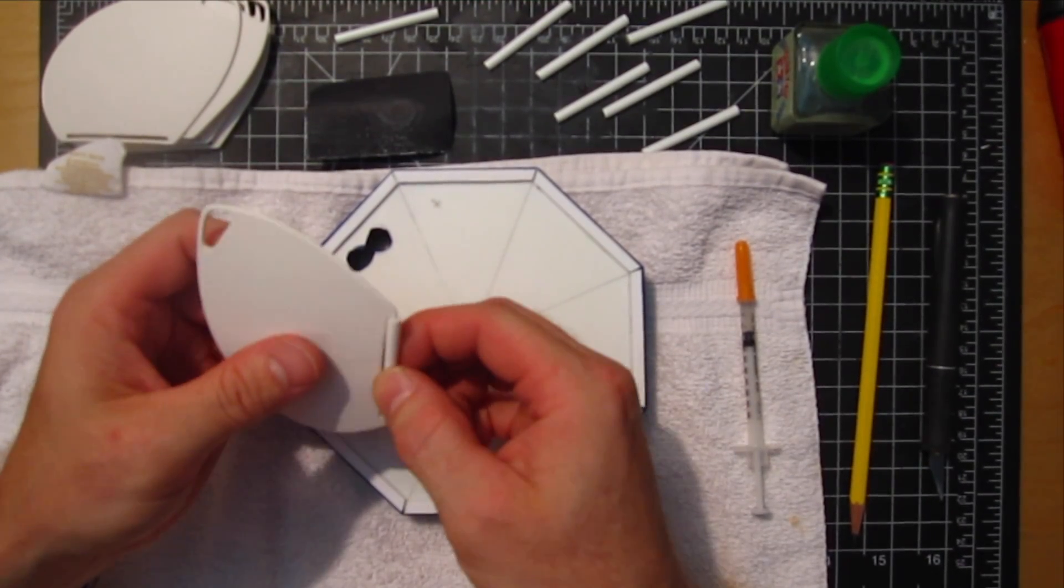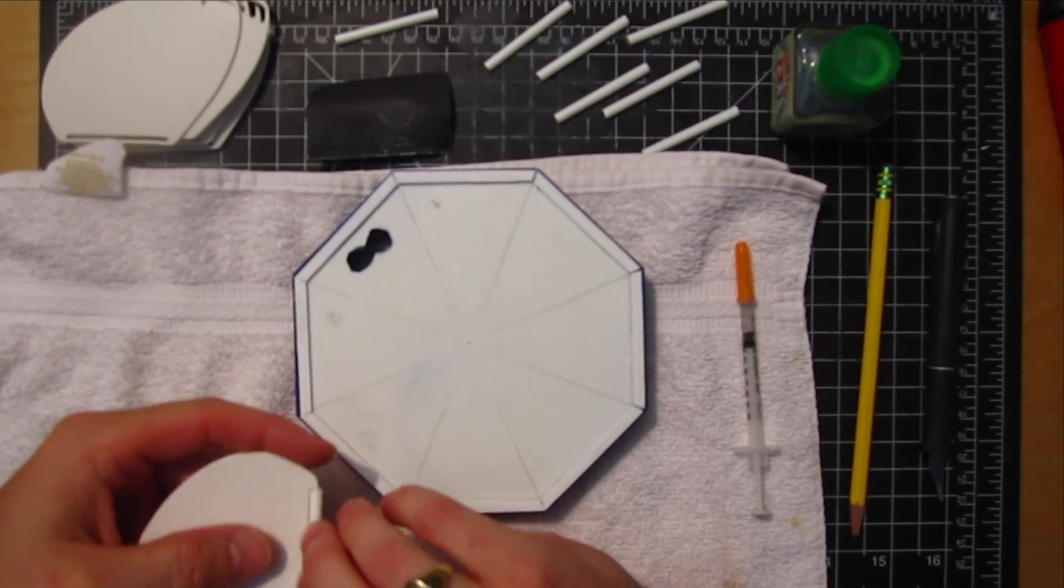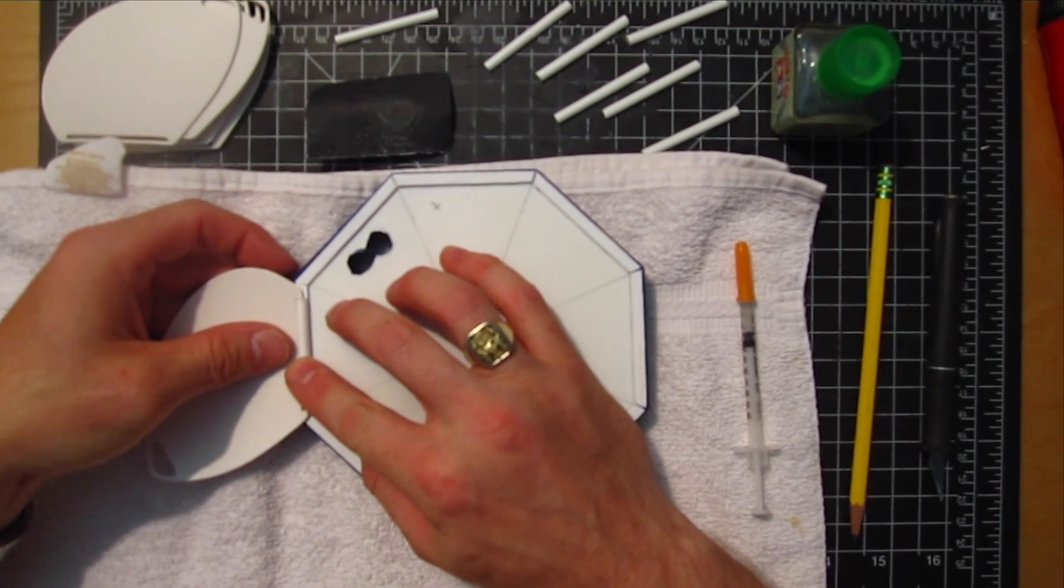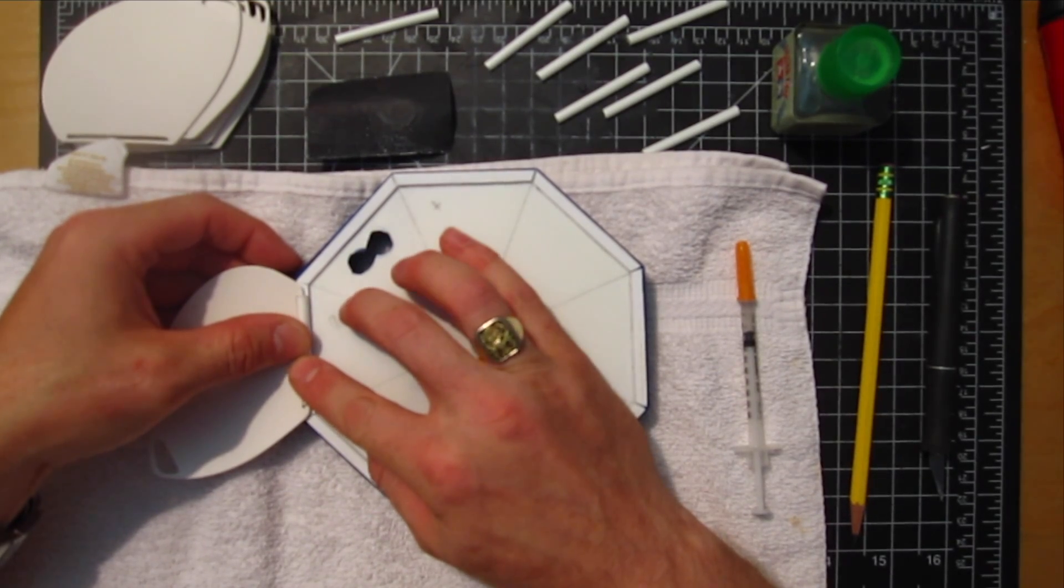Now that I have all the tubes cut, it's time to assemble them onto the main plate. Here I'm just doing a little test fit and I'm going to apply some solvent to it shortly to bond it to the main body plate.